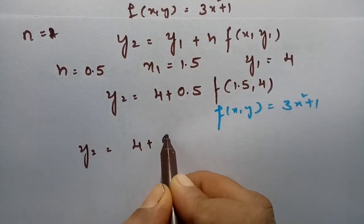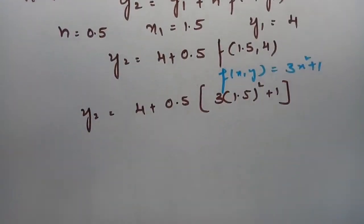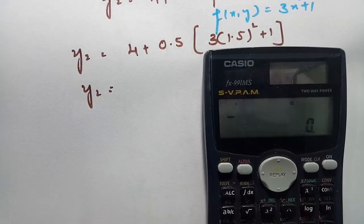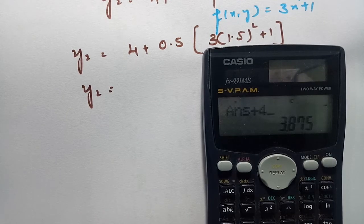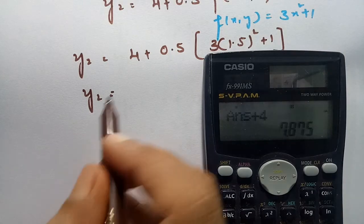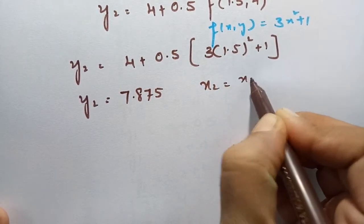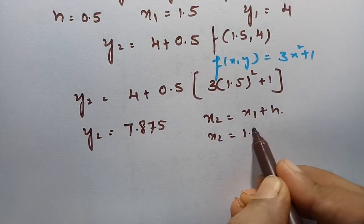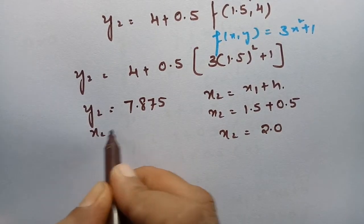y₂ = 4 + 0.5 × (3 × 1.5² + 1). Calculating: 3 × 1.5² + 1 × 0.5 + 4 gives y₂ = 7.875. And x₂ = x₁ + h = 1.5 + 0.5, so x₂ = 2.0.